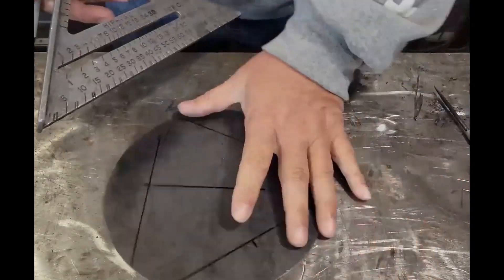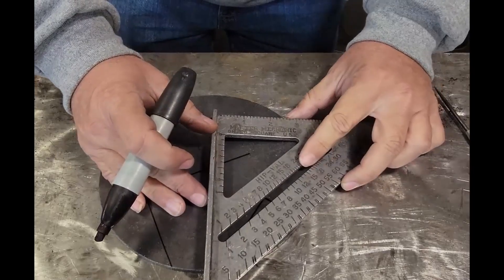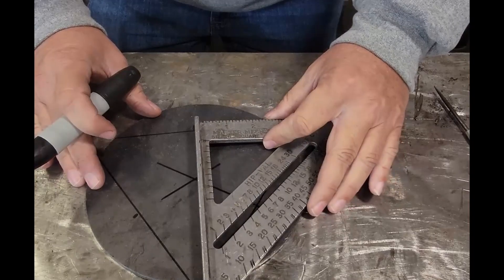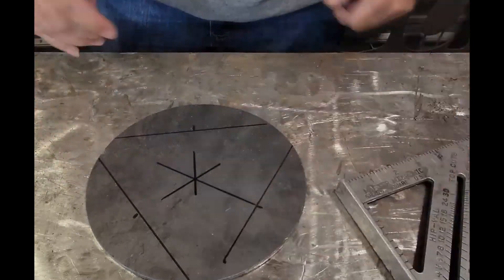We can take a regular old square, line it up with our line here and then line it up with the center line. And just like that you have your mark for center.